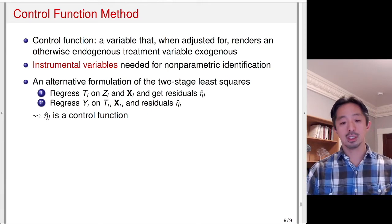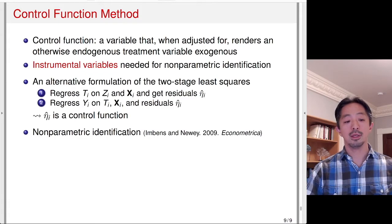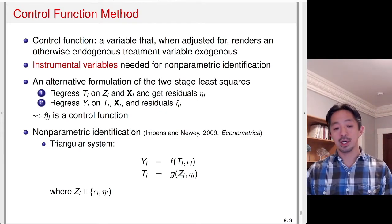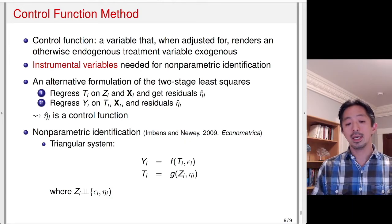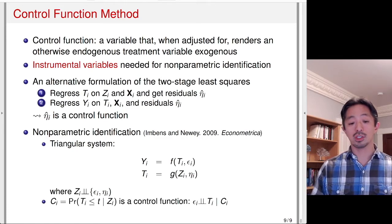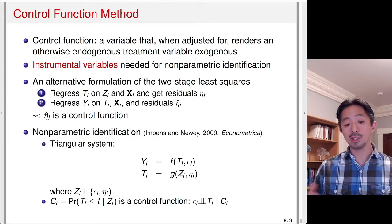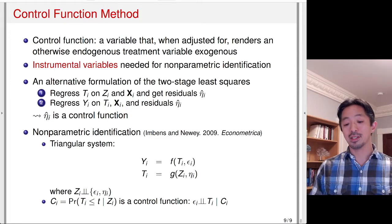This control function idea can be generalized further. The literature has developed non-parametric versions in what is called the triangular system: Y is a function of the endogenous treatment T, and T is a function of instrument Z. In this setting, the control function is the CDF of the treatment given the instrumental variable. Once you control for this function, the error term is no longer dependent on the treatment, making the treatment exogenous.